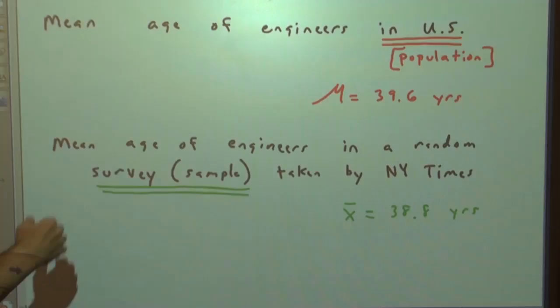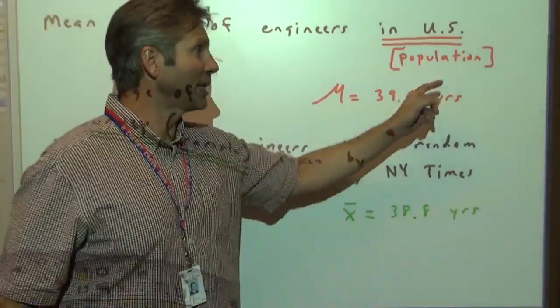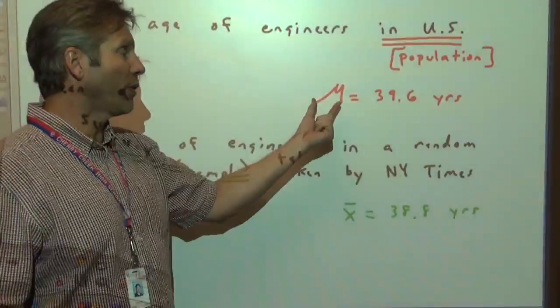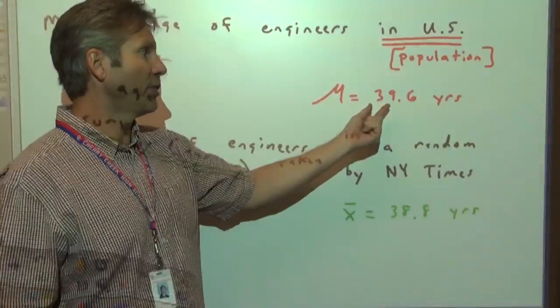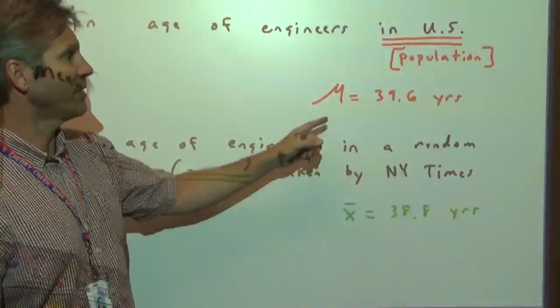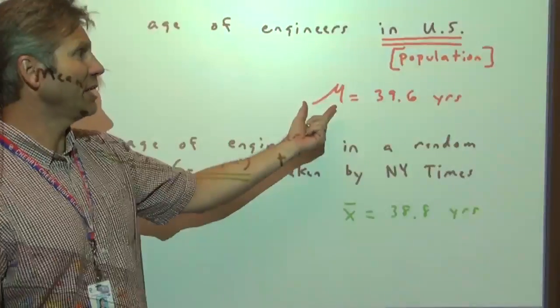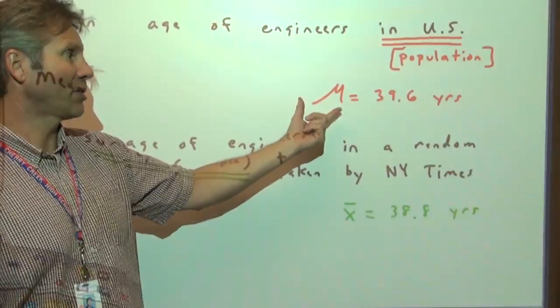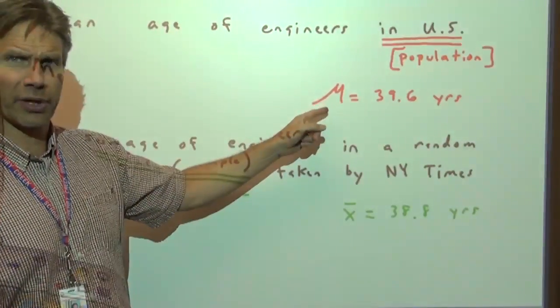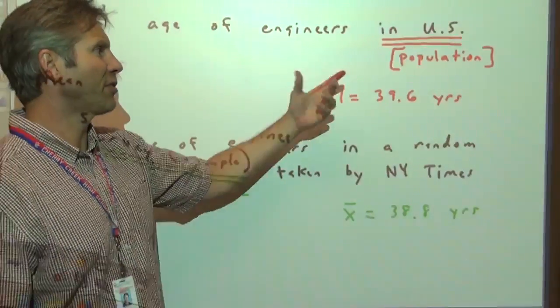So here we go. The mean age of engineers in the U.S., an entire population. Let's suppose we know that the mean, the numerical characteristic, is 39.6 years. Since it is the mean of an entire population, it is the population mean, it is a parameter, and we use mu, the Greek letter mu, to represent the mean for a population.